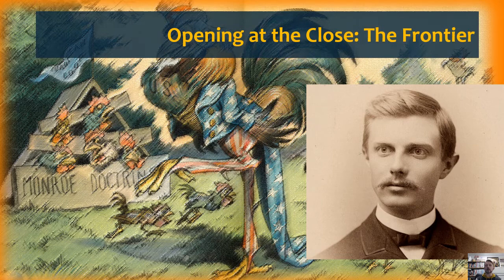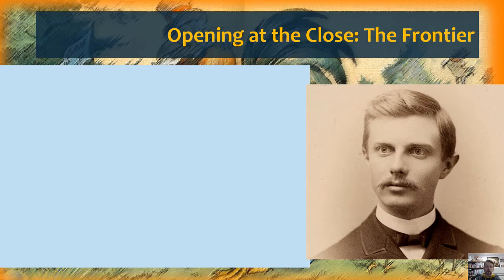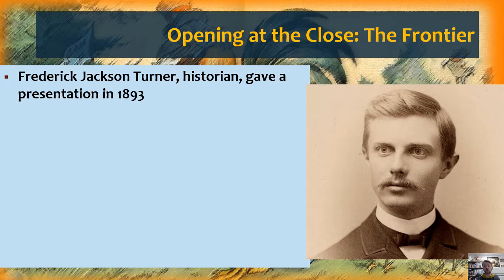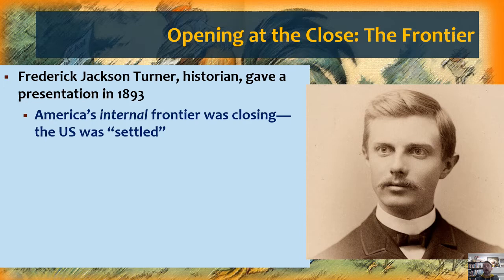Our prologue today is a story about a young historian, Frederick Jackson Turner, pictured here with this fine-looking mustache. Turner gave a very important paper in 1893, which he then sort of coasted on the rest of his entire life as a historian, but he did train a whole generation of people after him, so he's quite significant in historical circles. This presentation was on the end of the US frontier — settlement had closed as of 1890.